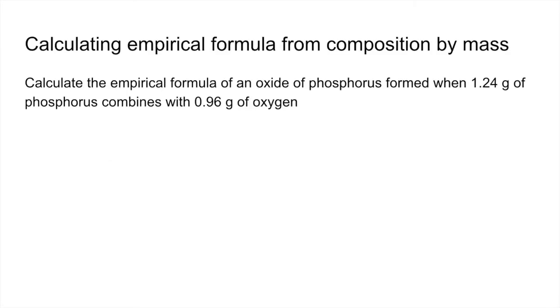So we're going to look at three types of calculation. The first one is calculate an empirical formula from composition by mass. So if you want to have a go, pause the video and then play on when you're ready for the answers.